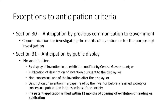Section 30 deals with anticipation by previous communication to government. In the event that innovators have communicated their invention to the government to investigate its merits, carry out statutorily required testing, or for regulatory approvals, that communication to the government would not anticipate the patent application filed after making that communication.